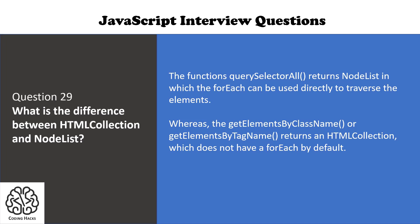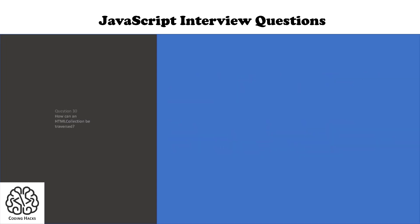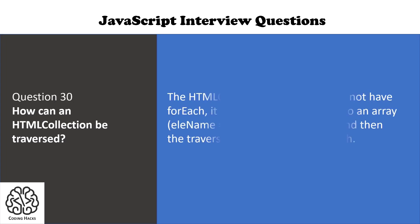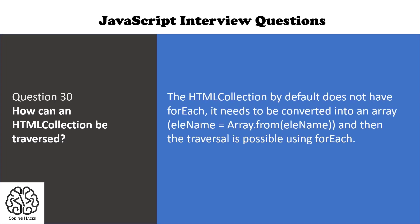Our last question in this video is: how can an HTML collection be traversed? An HTML collection by default does not have forEach. It needs to be converted into an array first, and after that traversal is possible by using the forEach method.